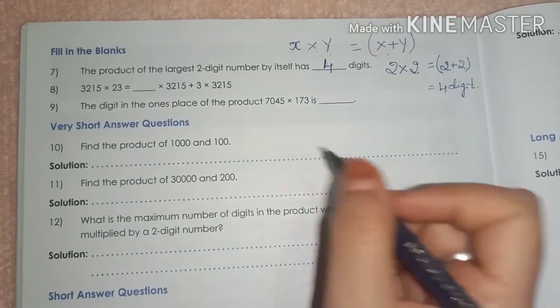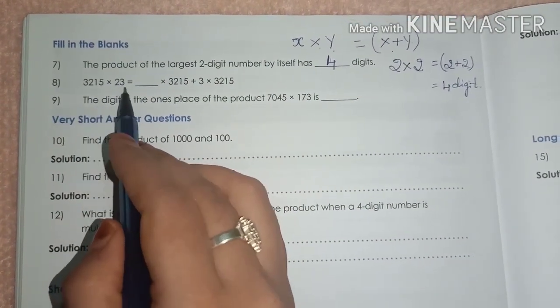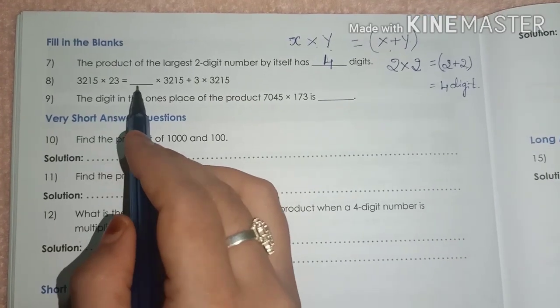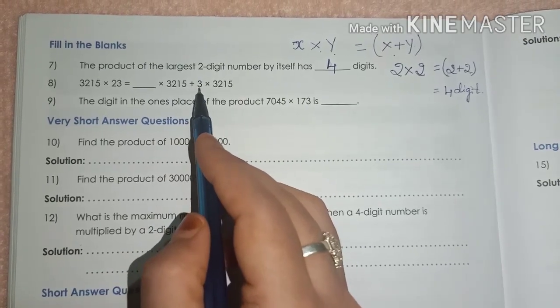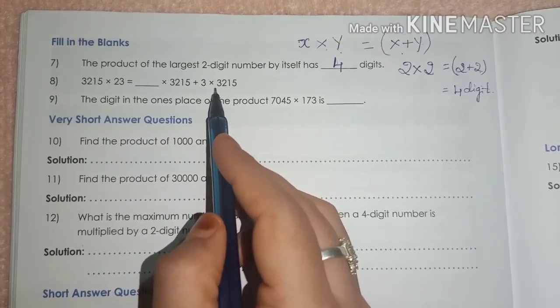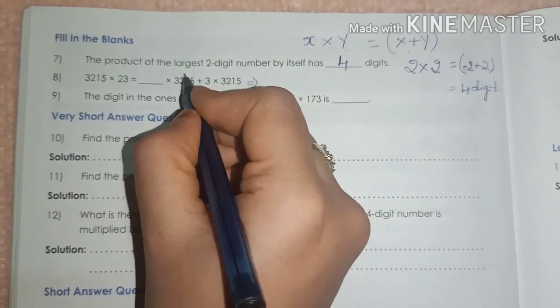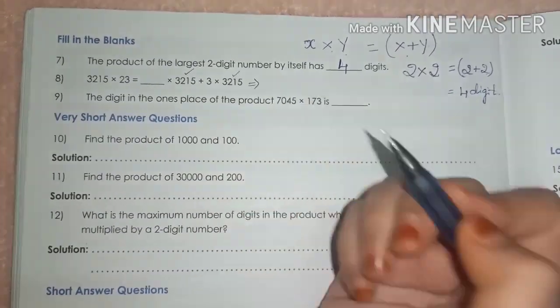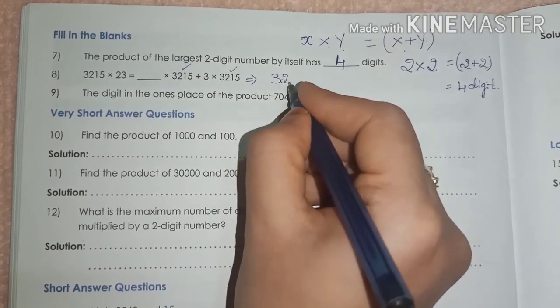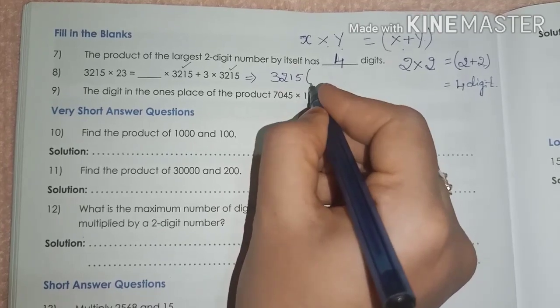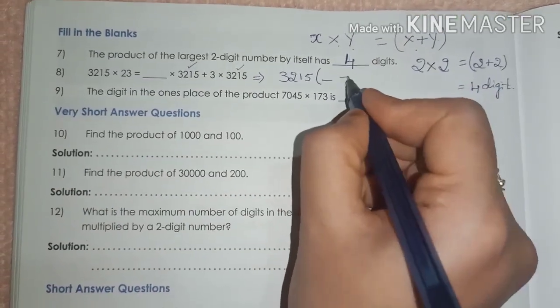Question number 8. 3,215 multiplied by 23 is equal to dash into 3,215 plus 3 into 3,215. Remember here, 3,215 and 3,215 take out as common. When you take out as common, you should write only one time. Then, inside, it will remain a number plus 3.